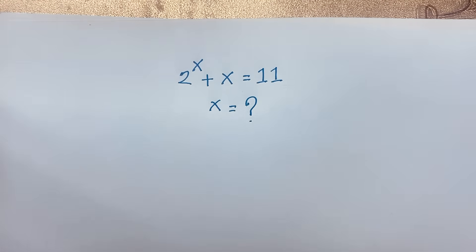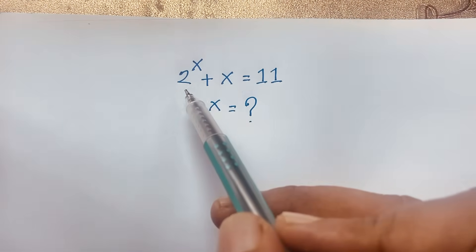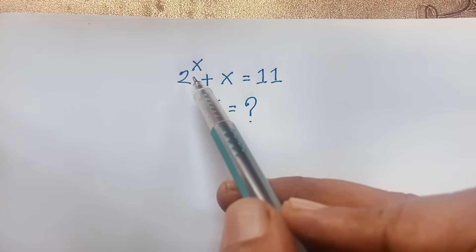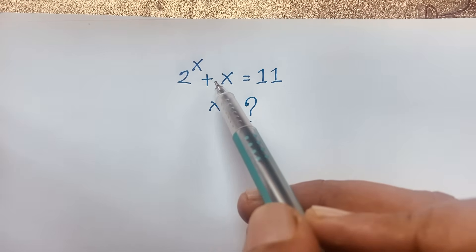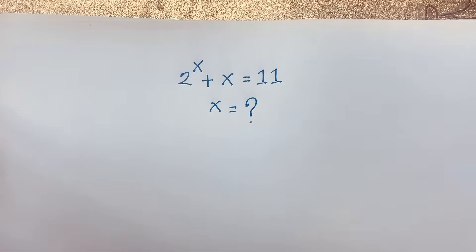If you think x is equal to 1, then 2 to the power 1 plus 1 is not equal to 11. If you think x is equal to 3, then 2 to the power 3 is 8, plus 3 is 11. So you can see the answer is 3; x is equal to 3.